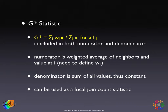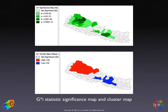Inference is done the same way — analytical inference is not recommended; the conditional permutation approach is the way to go. The output is again a significance map shown on top and a cluster map at the bottom. The significance map is very similar to what we had for the GI statistic. The cluster map again has only two colors: red for the high hot spots, and blue for the low cold spots.